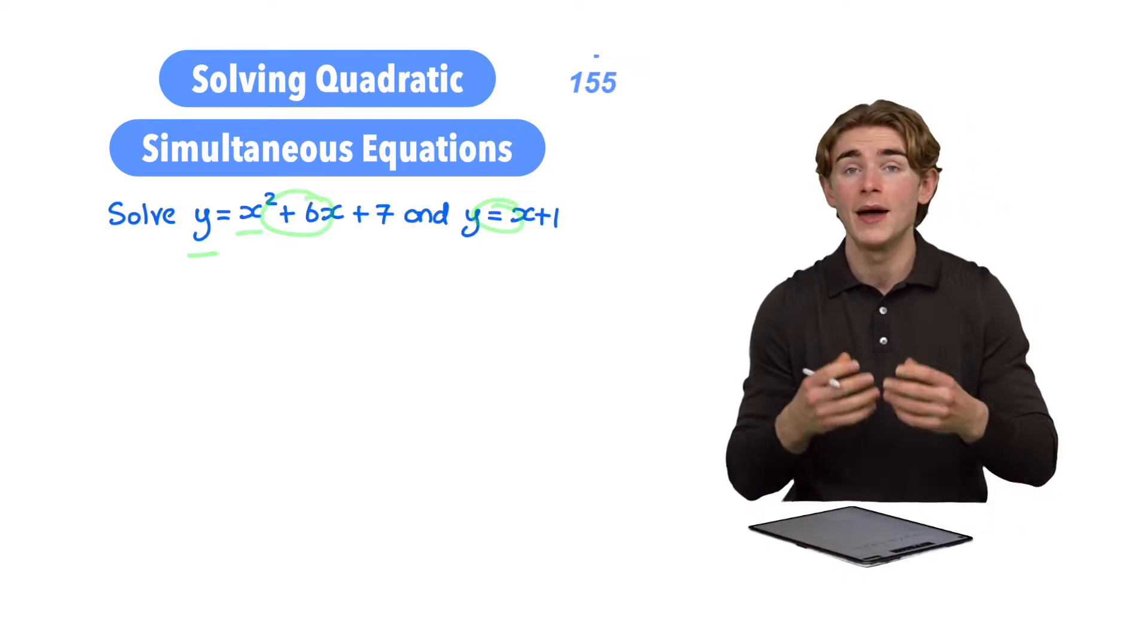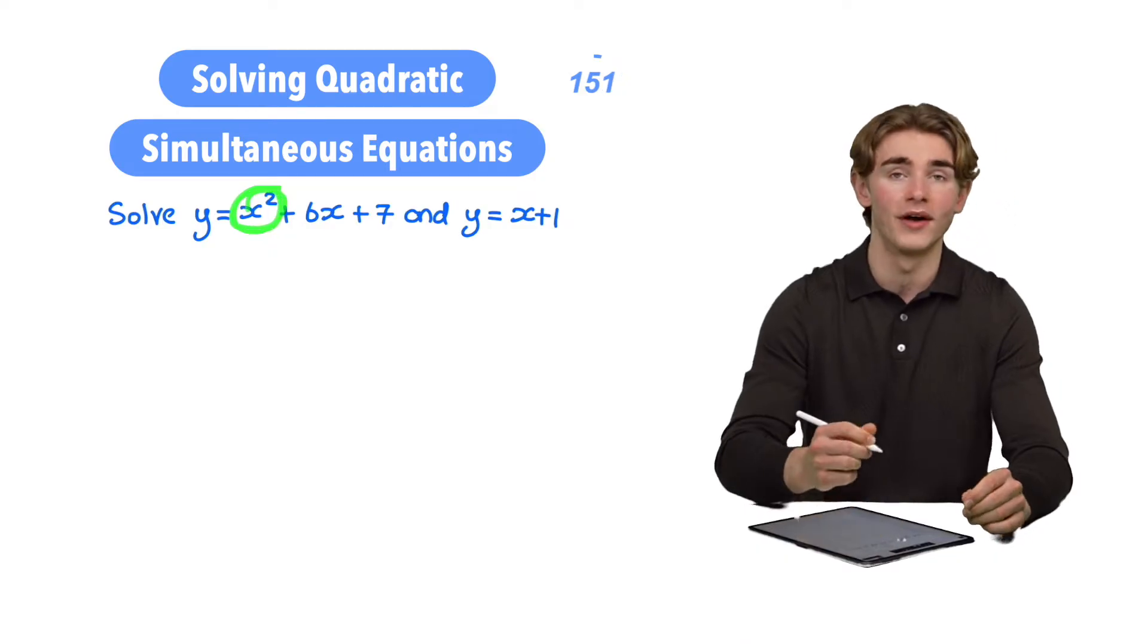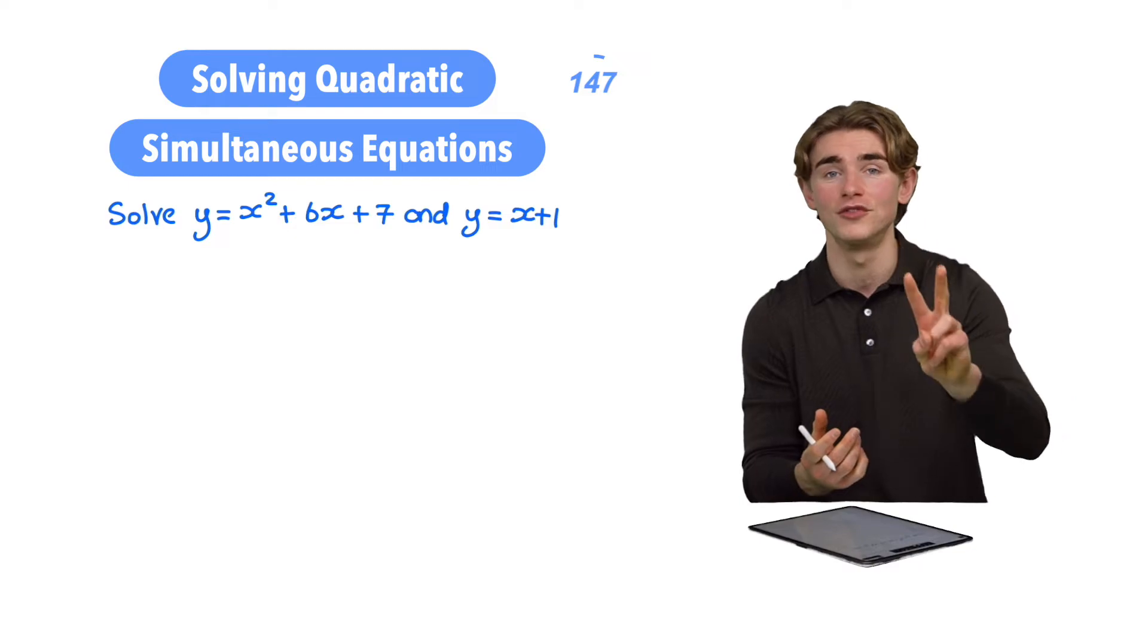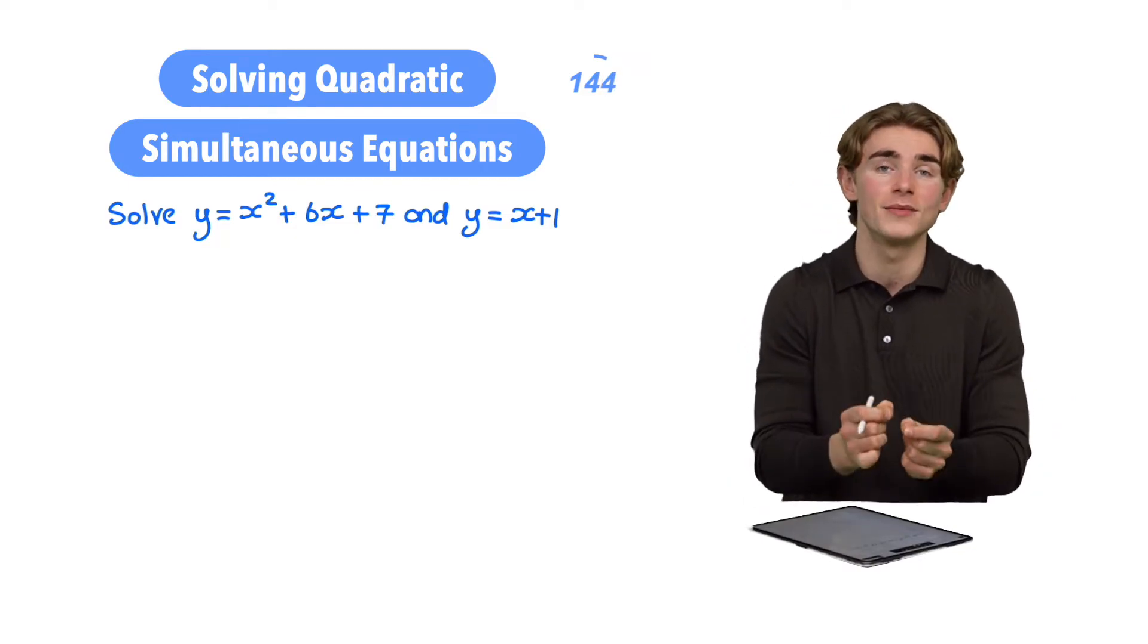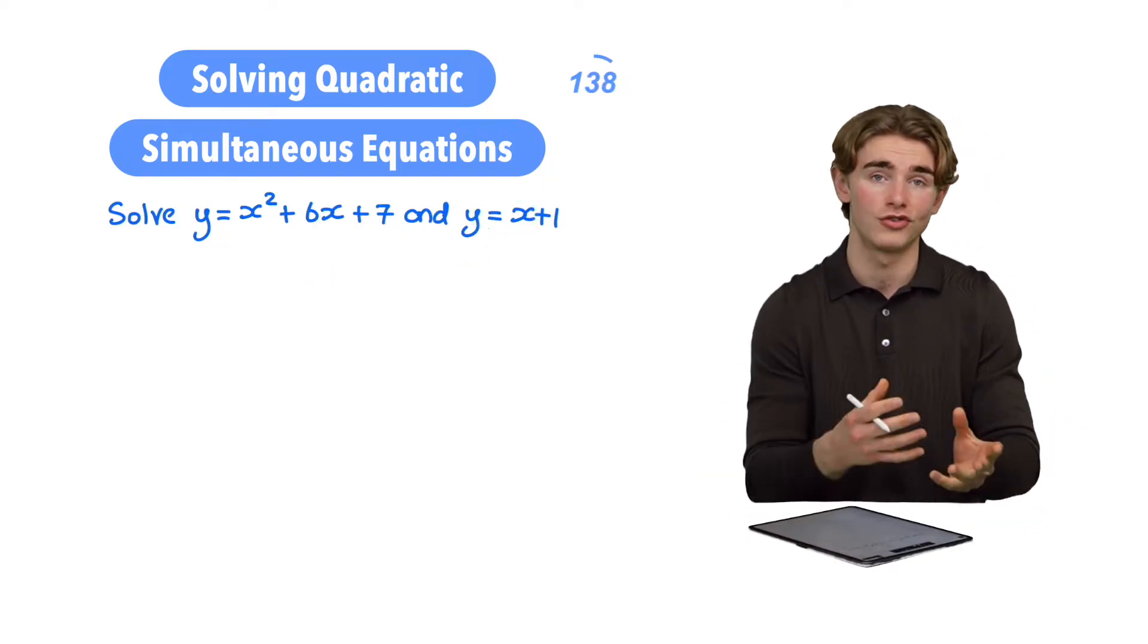We have an x and a y to work out, but this time we have an x² in one of our equations. And what that means is we're actually going to get two values for x and two values for y. The best way to do this is to substitute one of our equations, normally our linear one, into our other equation, our quadratic one.